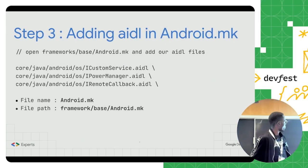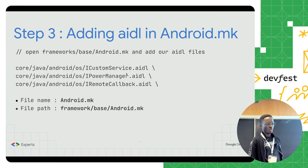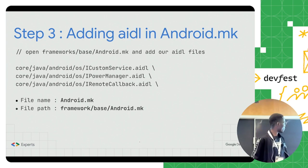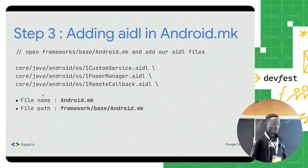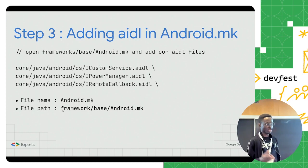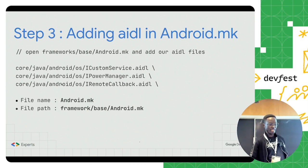Step three: we need to reference those IDL files in a file called android.mk. In this file, we just need to put the path of every single IDL file we have created — for example, iCustomService.idl, IPowerManager.idl, and so on. This file is located at framework/base/android.mk. We need to add the reference to the file we created here in order for the system to be able to recognize it.